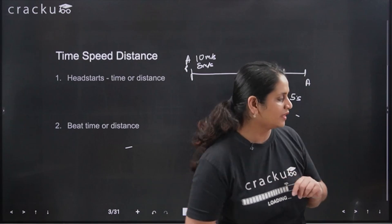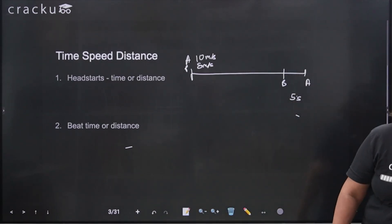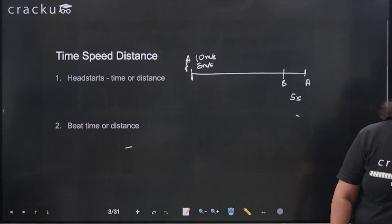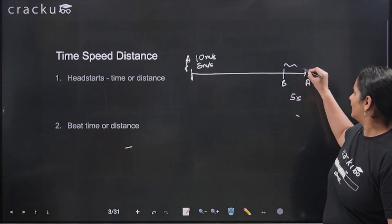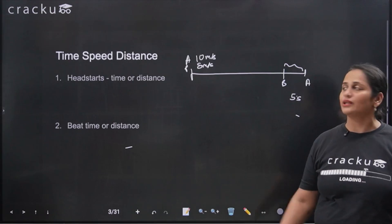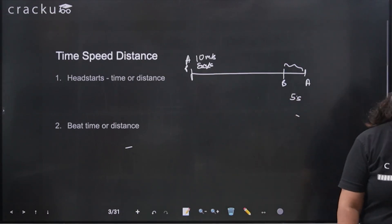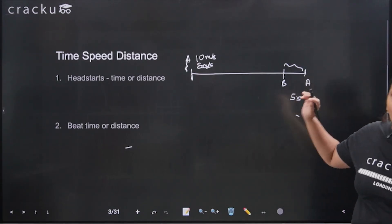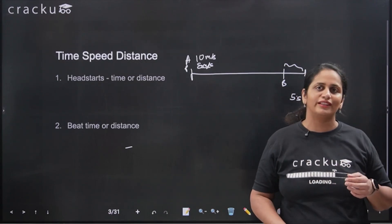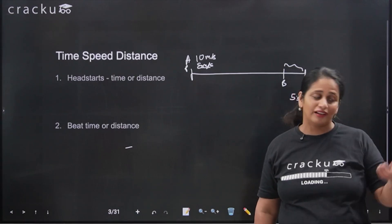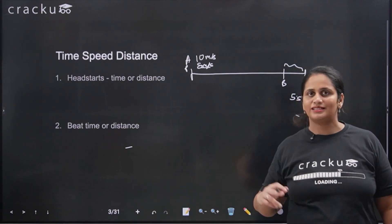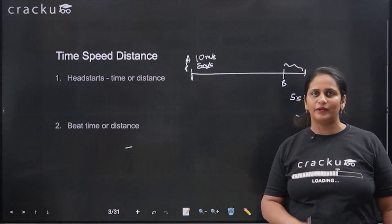So to summarize: B covers the beat distance in those 5 seconds, running at 8 meters per second, covering 40 meters. That is the correct answer. A common error is multiplying with the wrong speed. Whenever converting beat time to beat distance or head start time to head start distance, always multiply by the speed of the guy who is being beaten or given the head start.